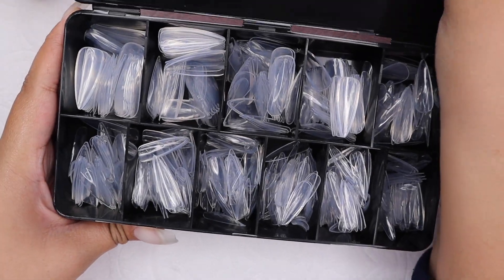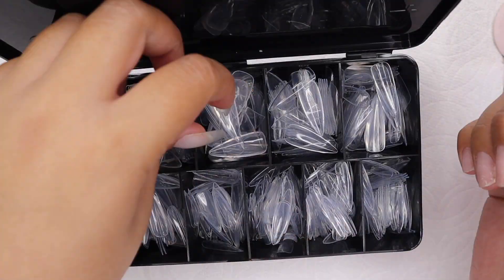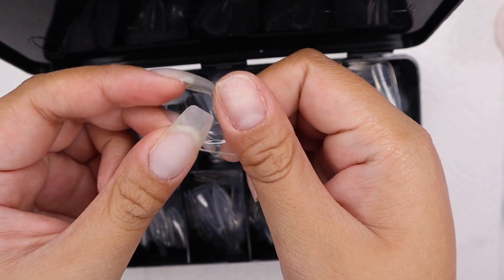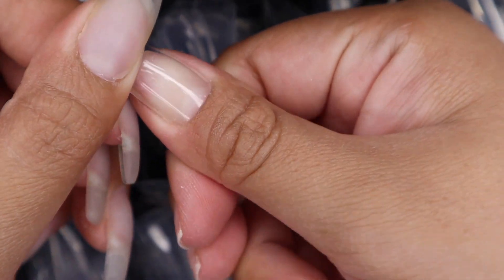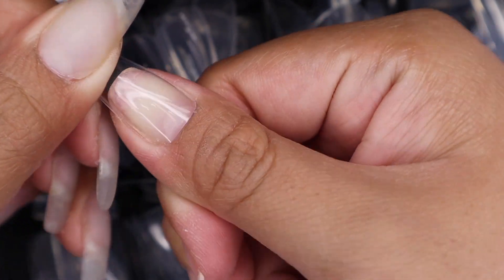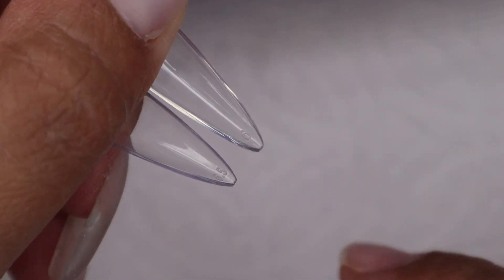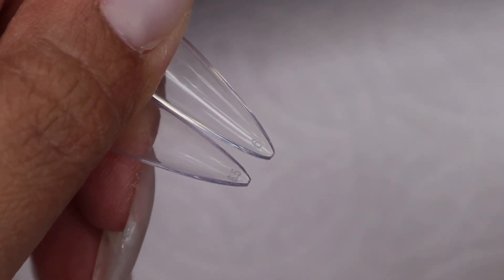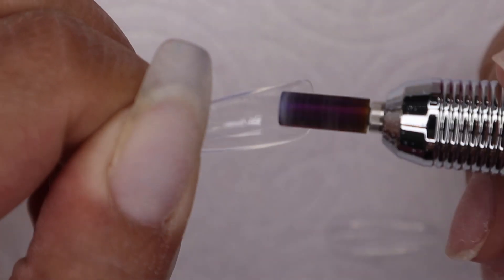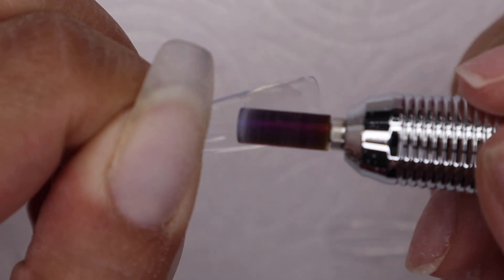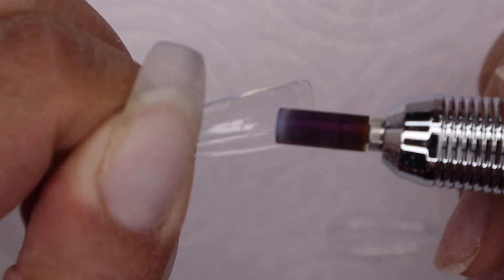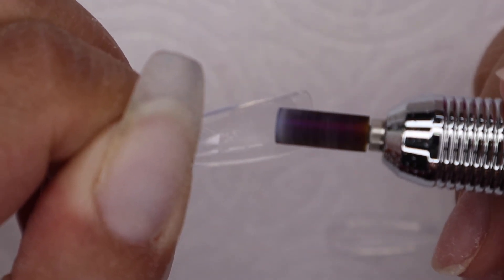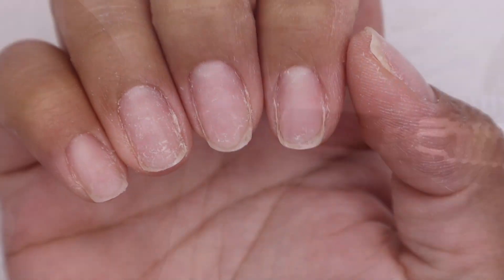When choosing the right size, make sure that it will fit your whole nail from sidewalls to sidewalls, and you can also file the sides to make the fit even better. What I'm showing you right now are the numbers. There are half numbers as well which is really nice. Don't forget to rough the inside part of the jelly tips so that it will help with the adhesion.